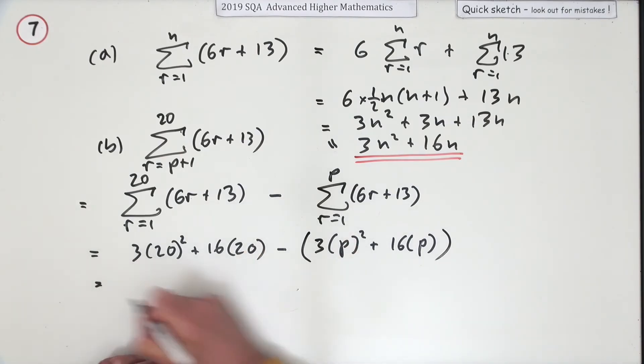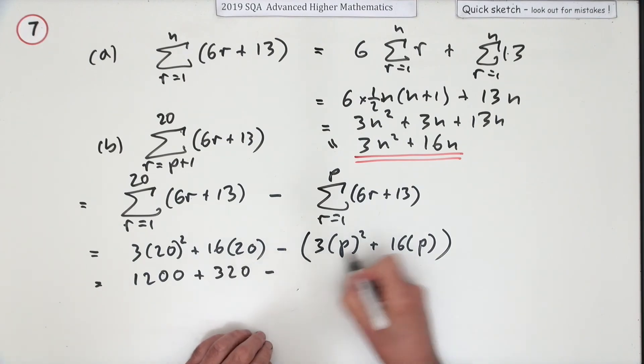So what does that lot come to? Well that's 400, which makes that 1200. That's 32 tens, minus, and that's 3p squared, and minus again 16p.